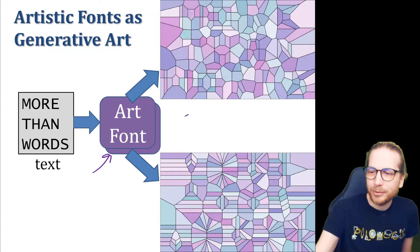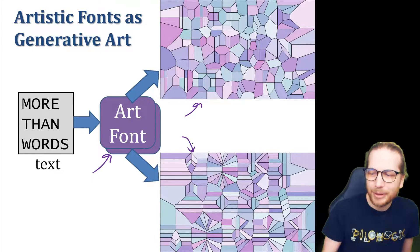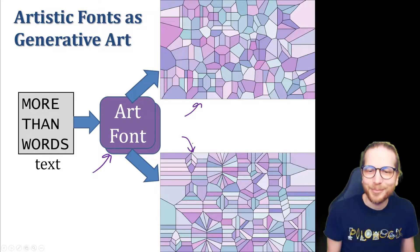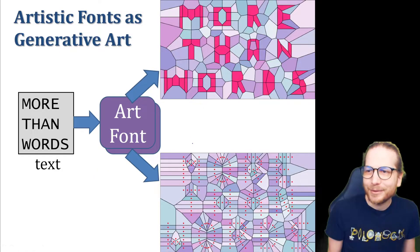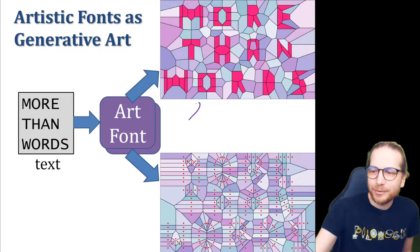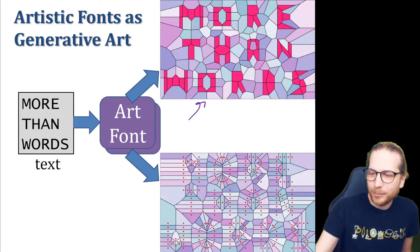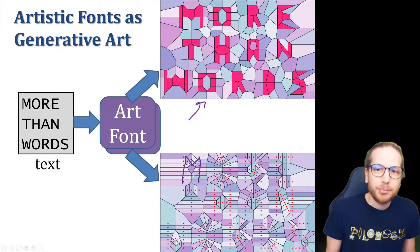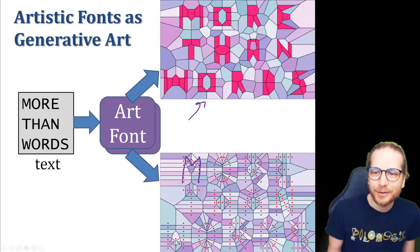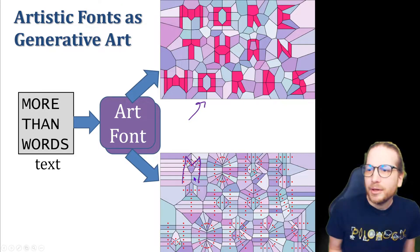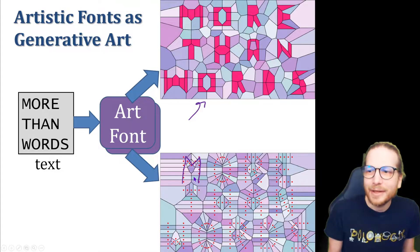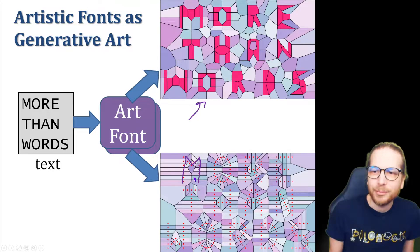So these are two examples from the methods I'm about to talk about. And the text is hidden in there, though you probably can't see it. Here I'll highlight. In the top one, you can see pretty clearly more than words. In the bottom one, there's some dots in a pattern here that express those words. So this is what we're going to explore using artistic fonts to make art that also has as like a hidden second layer the text that you want to express.